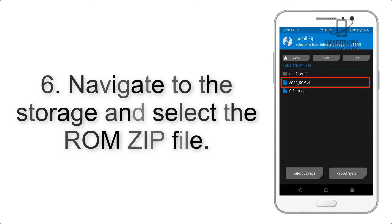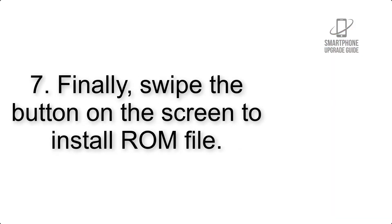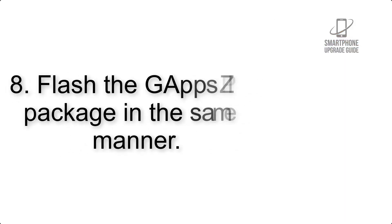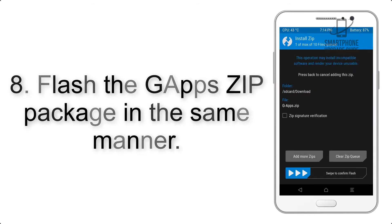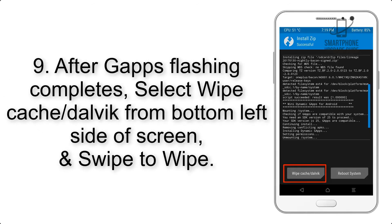Step 5: Go back to the recovery main screen and tap on the Install button. Step 6: Navigate to the storage and select the ROM zip file. Step 7: Finally, swipe the button on the screen to install the ROM file.